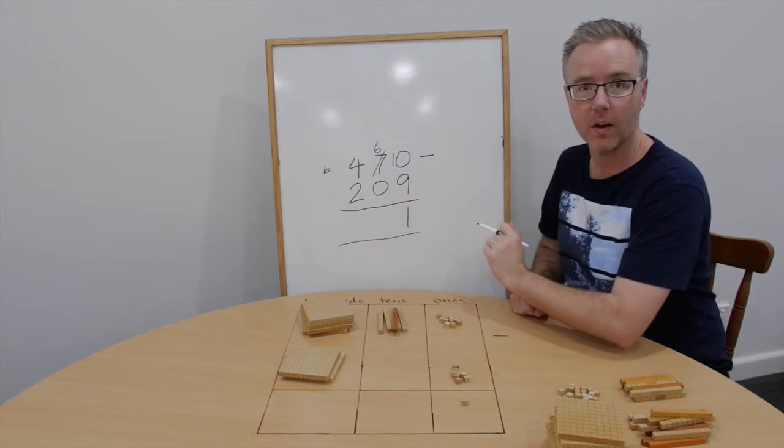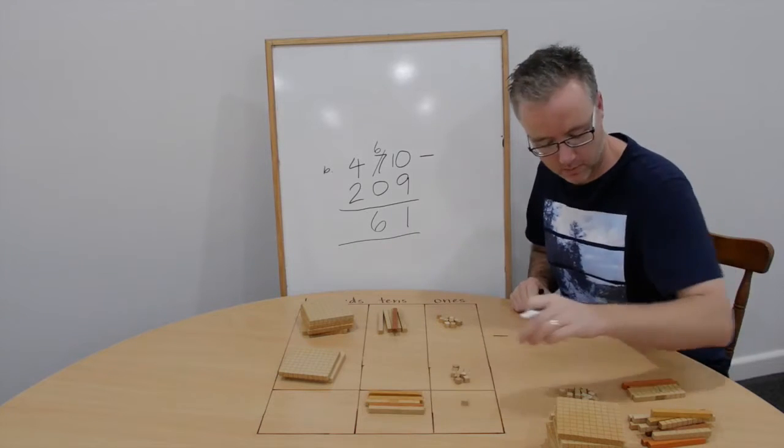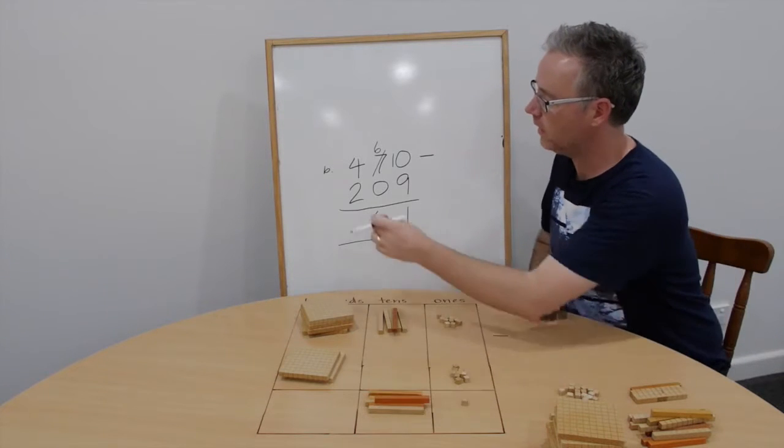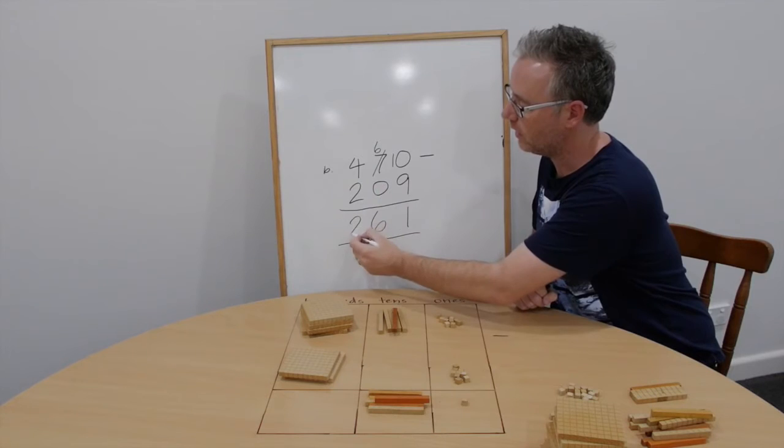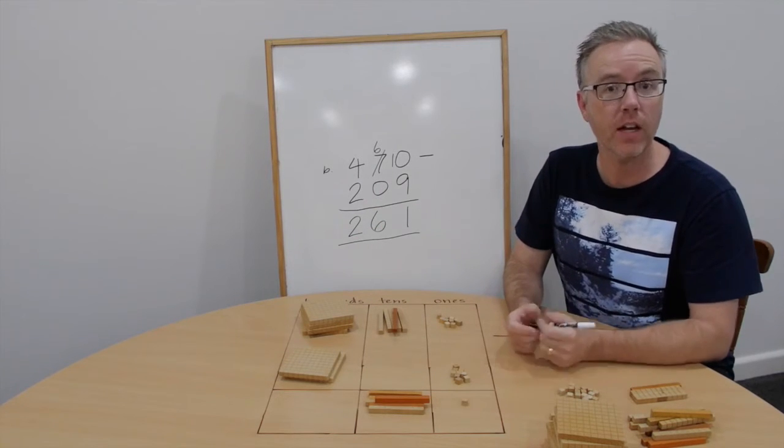60 take away nothing. 60. And 400 take away 200 is 200. Answer, 261. Check your estimate.